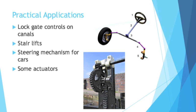Stair lifts — if you've seen those commercials, usually for the elderly on stairs, the chair that sits and moves up the stair, that's a rack and pinion. Inside the chair would be a pinion, and going up the rail of the stairs, probably internally, would be some sort of rack gear.